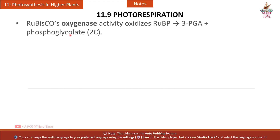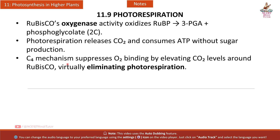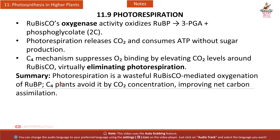Section 11.9 Photorespiration: Rubisco's oxygenase activity oxidizes RuBP to 3-PGA plus phosphoglycolate (2C). Photorespiration releases CO2 and consumes ATP without sugar production. The C4 mechanism suppresses O2 binding by elevating CO2 levels around Rubisco, virtually eliminating photorespiration. C4 plants avoid it by CO2 concentration, improving net carbon assimilation.